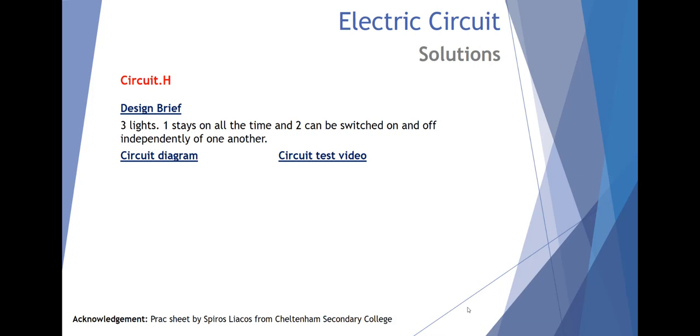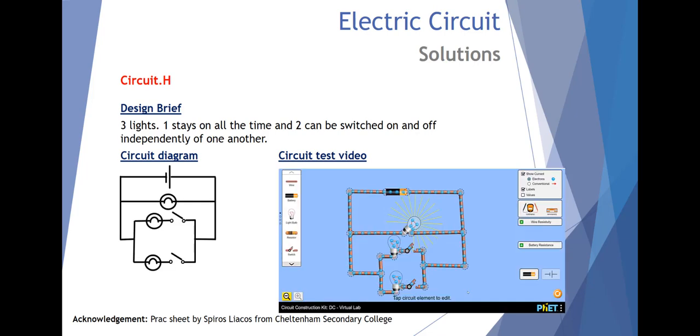Circuit H, three lights, one stays on all the time and two can be switched on and off independently of one another. One stays on all the time and two can be switched on and off independently of one another.